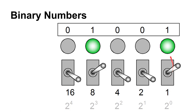Counting in binary: you have 1, then turn that off and turn on the '2' bit to get two, then enable both to get three. For four, turn those two off and turn the '4' bit on. For five, leave the '4' on and turn the '1' on. With just 5 bits you can represent numbers from 0 up to 31.